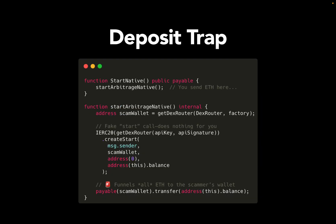Next up you have a deposit trap. What does this function do? You send ETH to start trading, but it is sending all your ETH directly to the hidden wallet — I call that the scam wallet. There is no actual trade happening; you lose everything instantly. You click trade and your ETH is gone in one line of code.